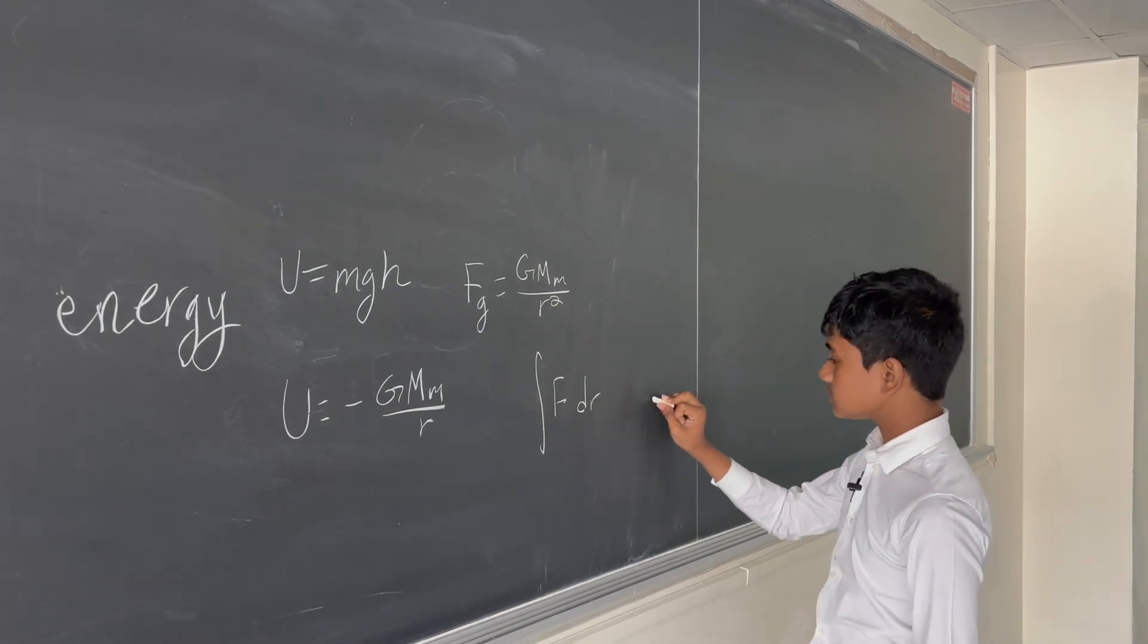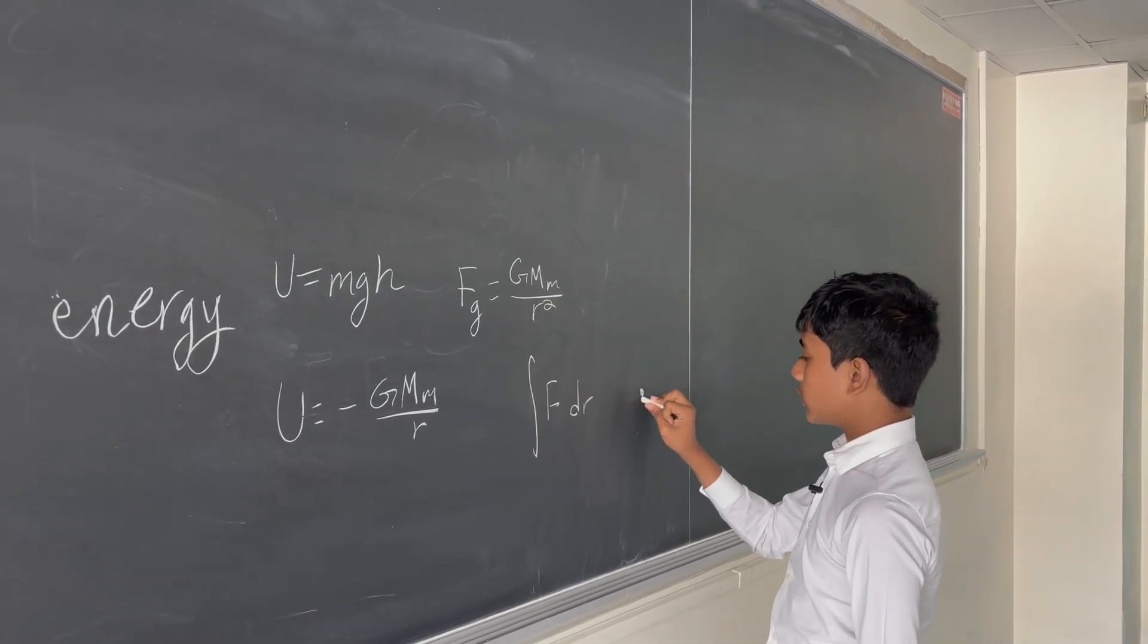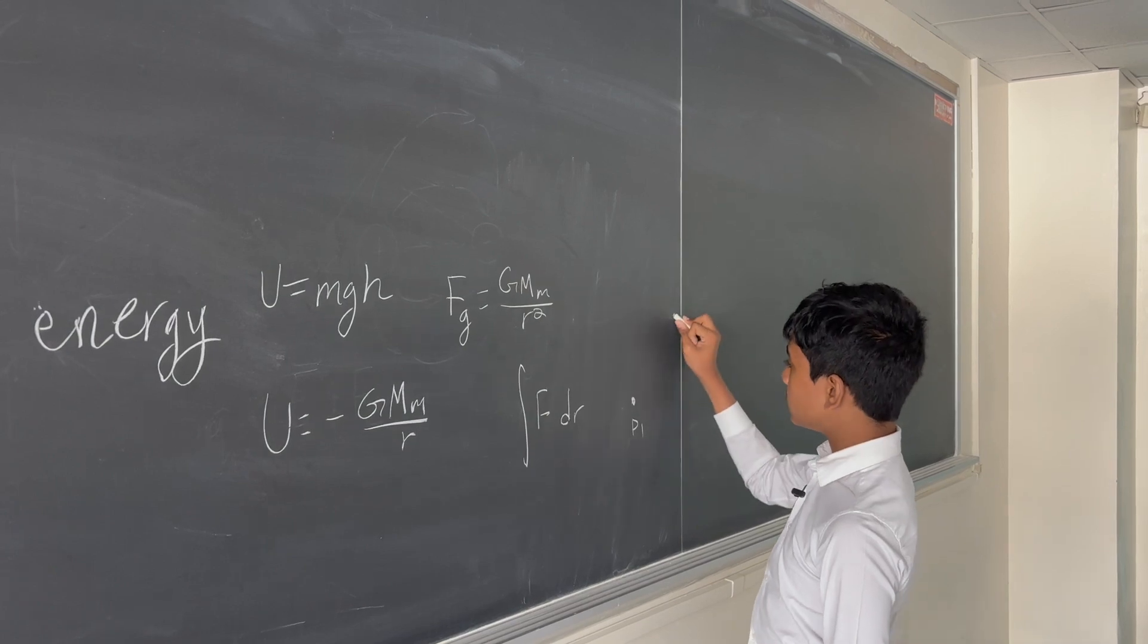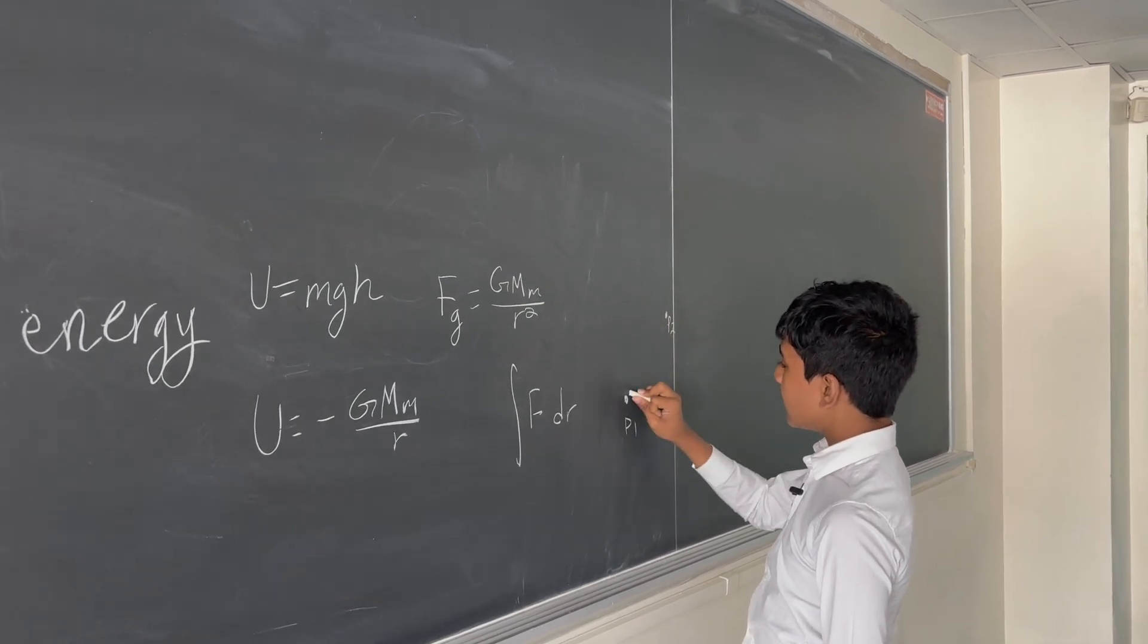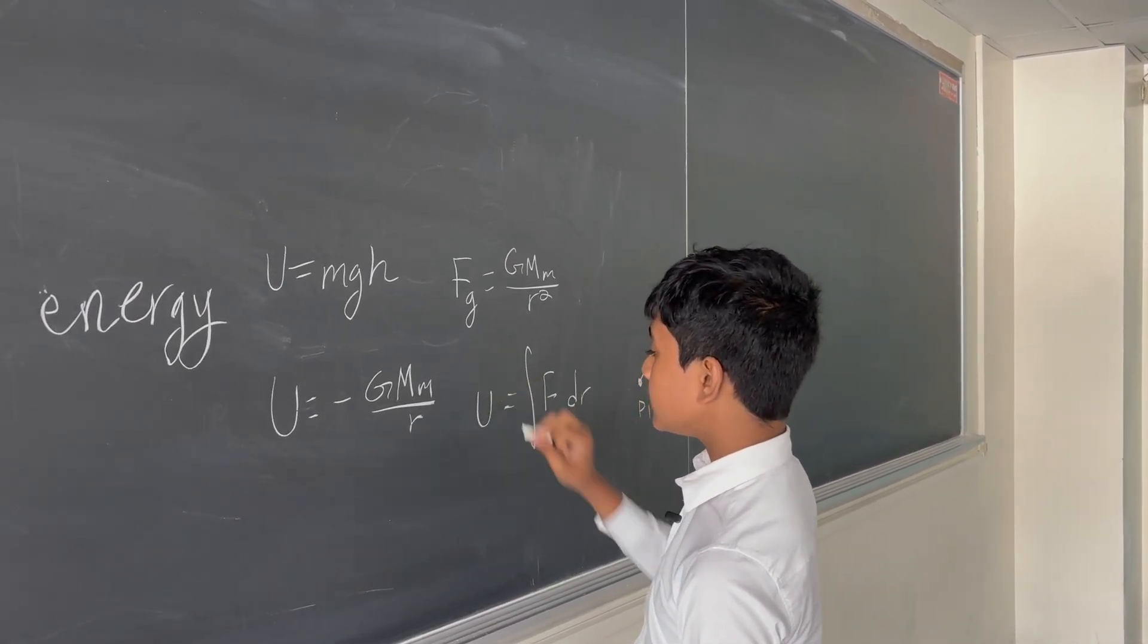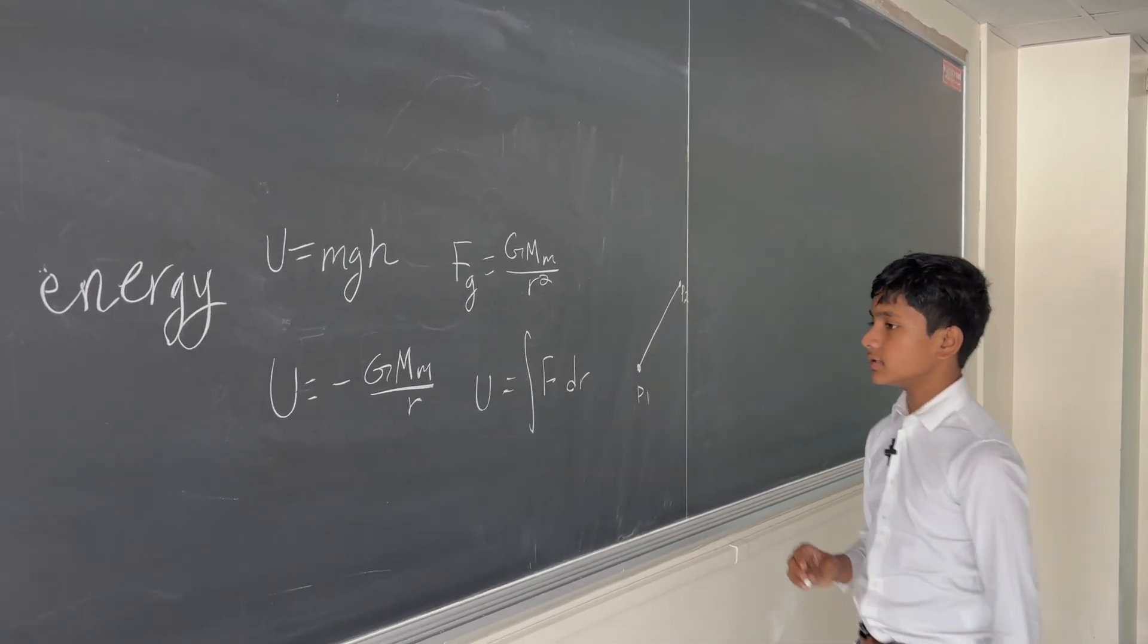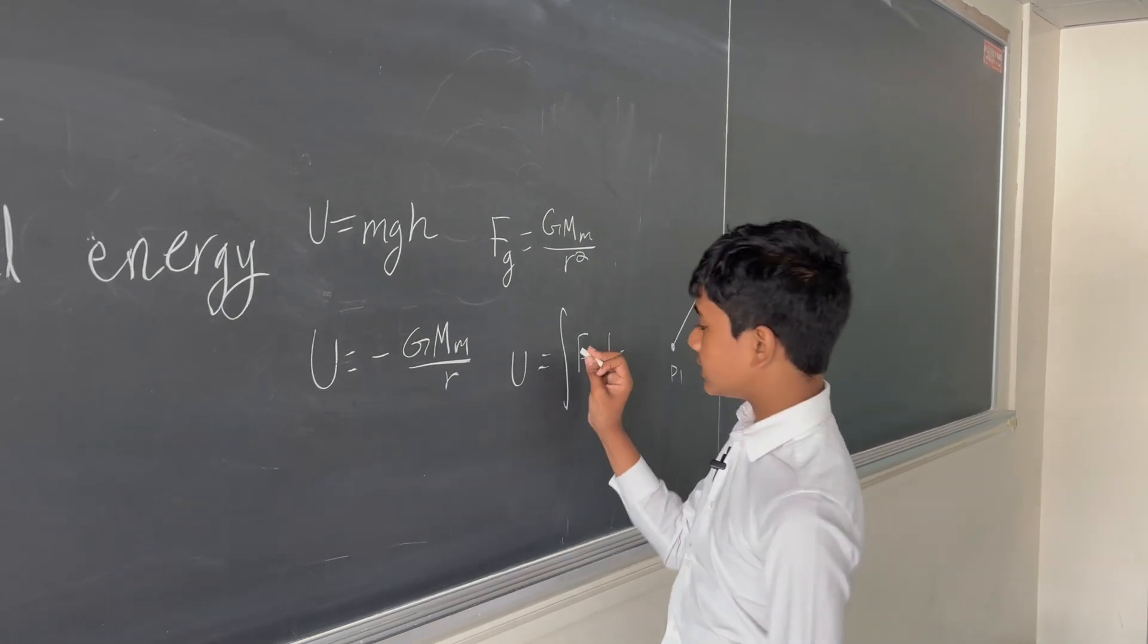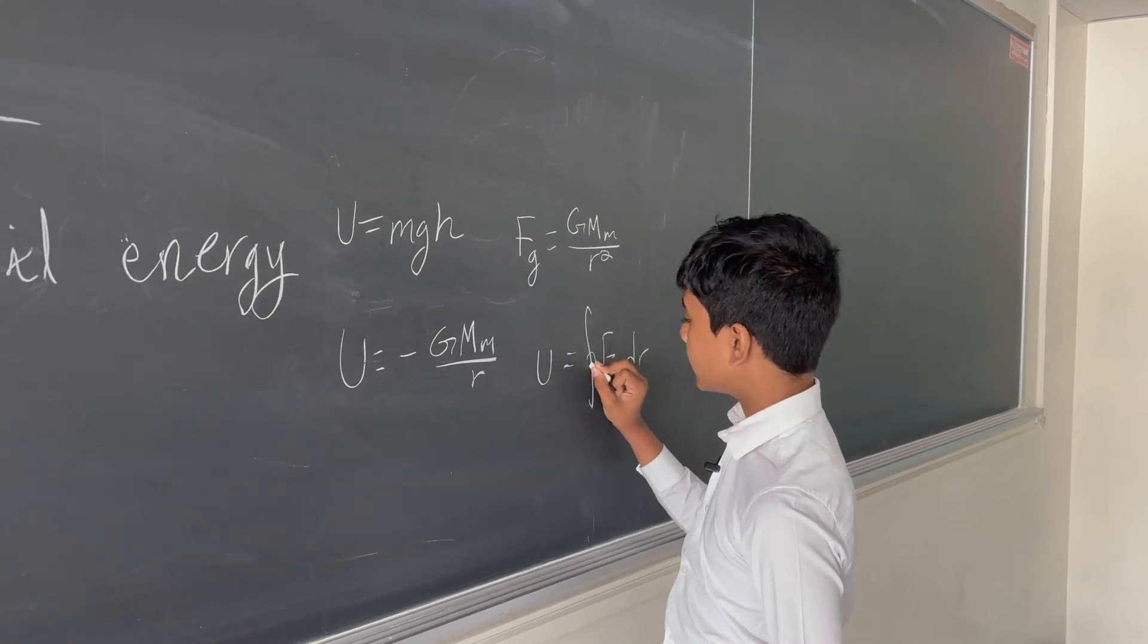So from point 1 to point 2, you've got this distance, and we're simply integrating over it. So this is the potential energy. This is what we know as a line integral.